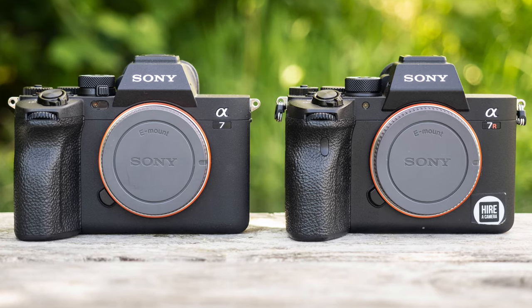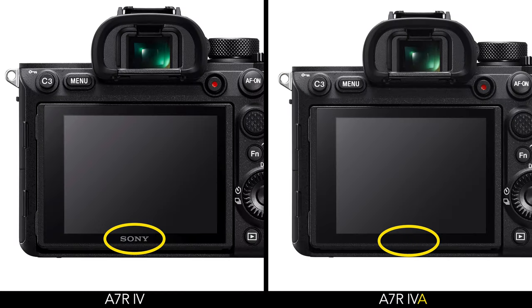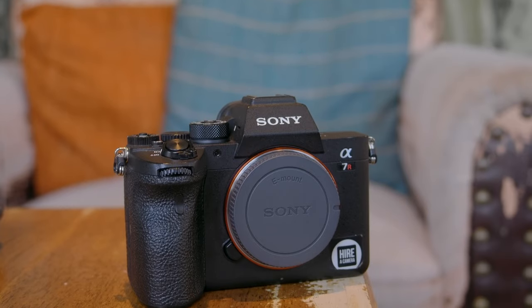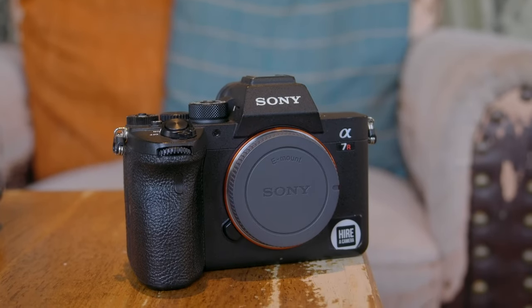Different sensor, different price, but there is much more to analyze. The a7R IV was released in 2019, but in 2021 Sony quietly updated it with a new model, the a7R IV-A. It wasn't an official upgrade and they are 99% the same camera. The main difference is the resolution of the LCD screen, which is higher on the A model. So in this video you'll see the original a7R IV, which is now discontinued and replaced by the a7R IV-A, but they are basically the same.